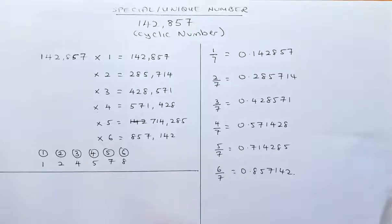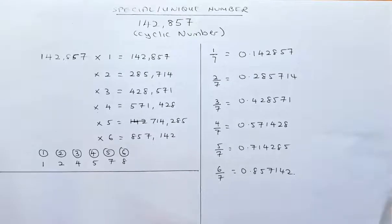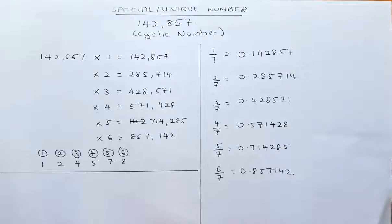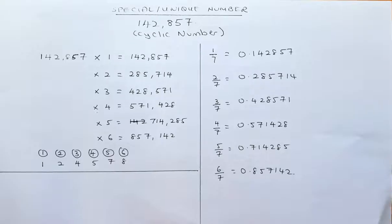Let's do it first. If you take 142857 and multiply by 1, you get 142857. Multiply by 2, you get 285714. Multiply by 3, you get 428571. Multiply by 5, you get 714285. And multiply by 6, you get 857142.